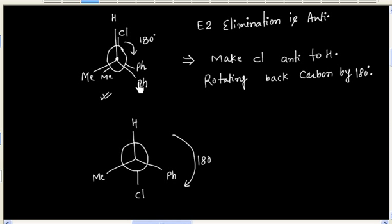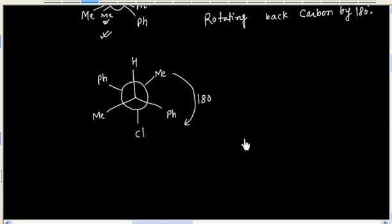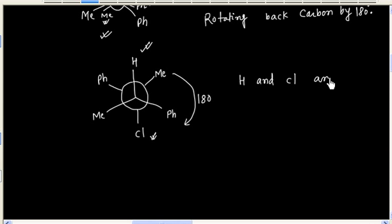The phenyl on the back carbon will come here, and the methyl on the back carbon will come here. So we have rotated all groups attached to the back carbon by 180 degrees. In this new conformation, hydrogen and chlorine are anti-periplanar to each other.